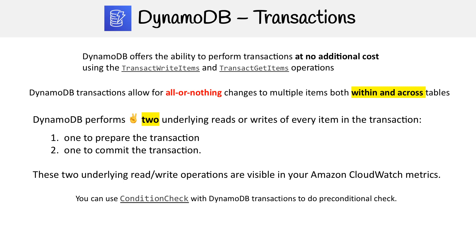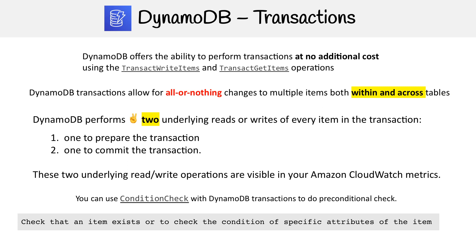You can also use condition check with DynamoDB transactions to do a pre-conditional check. This checks that an item exists or verifies the condition of specific attributes of the item — essentially a way of doing a check before you run the transaction. That covers the specifics of DynamoDB transactions.